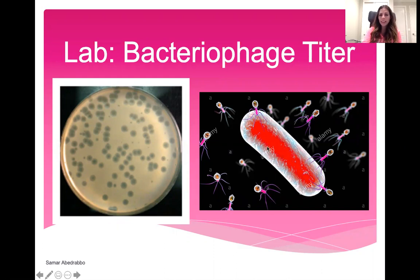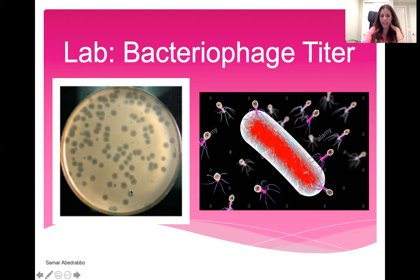Most of the time when bacteriophages infect bacteria they cause the bacterial cells to lyse or die. Here on this picture you see an agar plate, and this is what you're going to do in lab. All the white places are bacterial growth, and the clearings, which we call plaques, are where bacteriophages have infected bacteria and caused them to lyse or die.